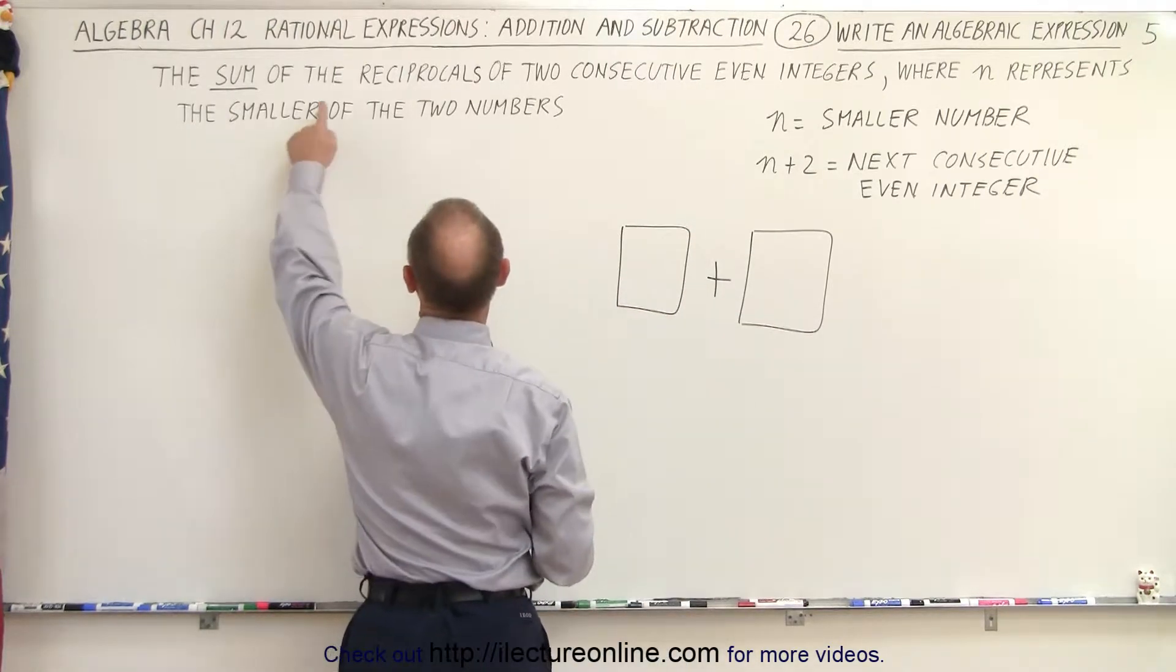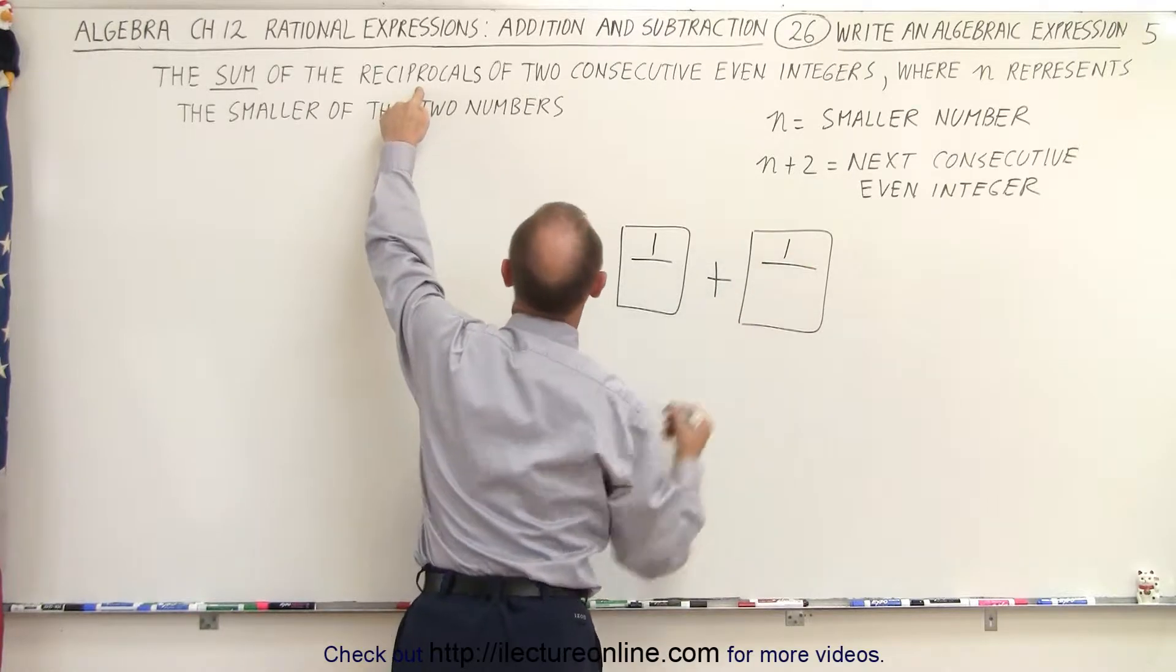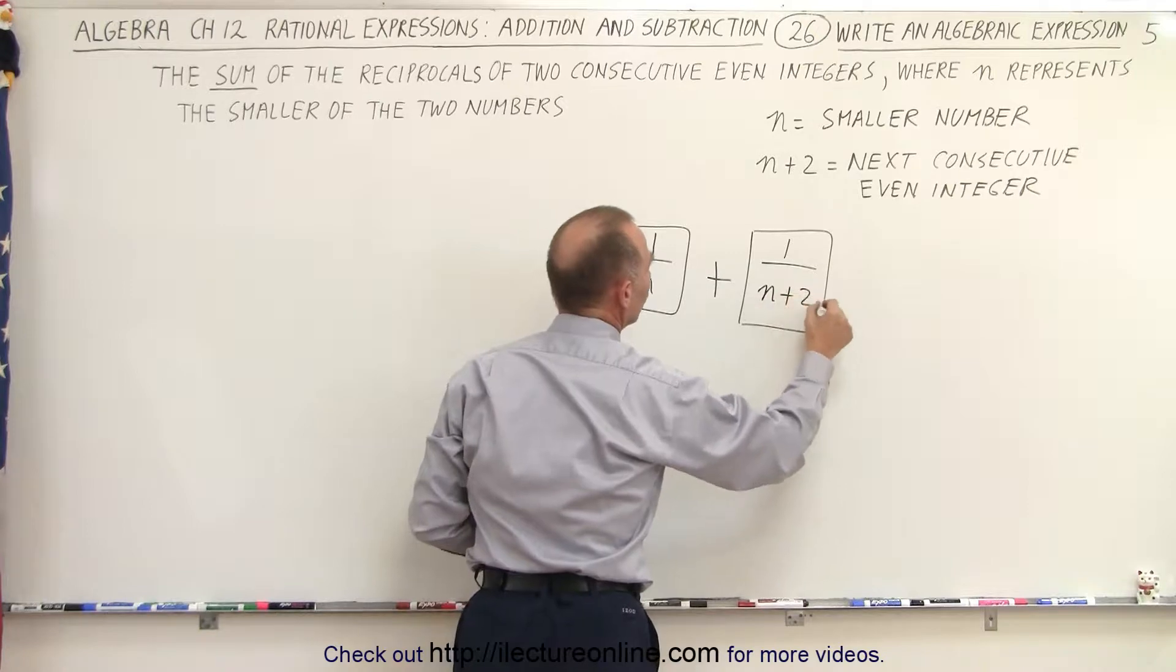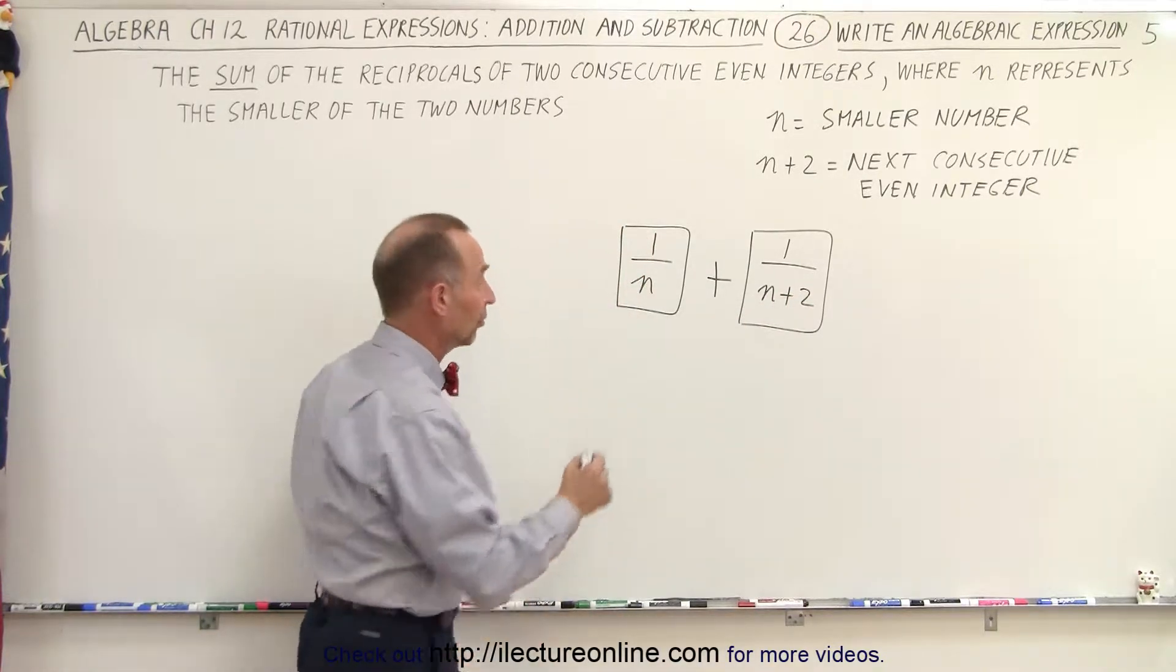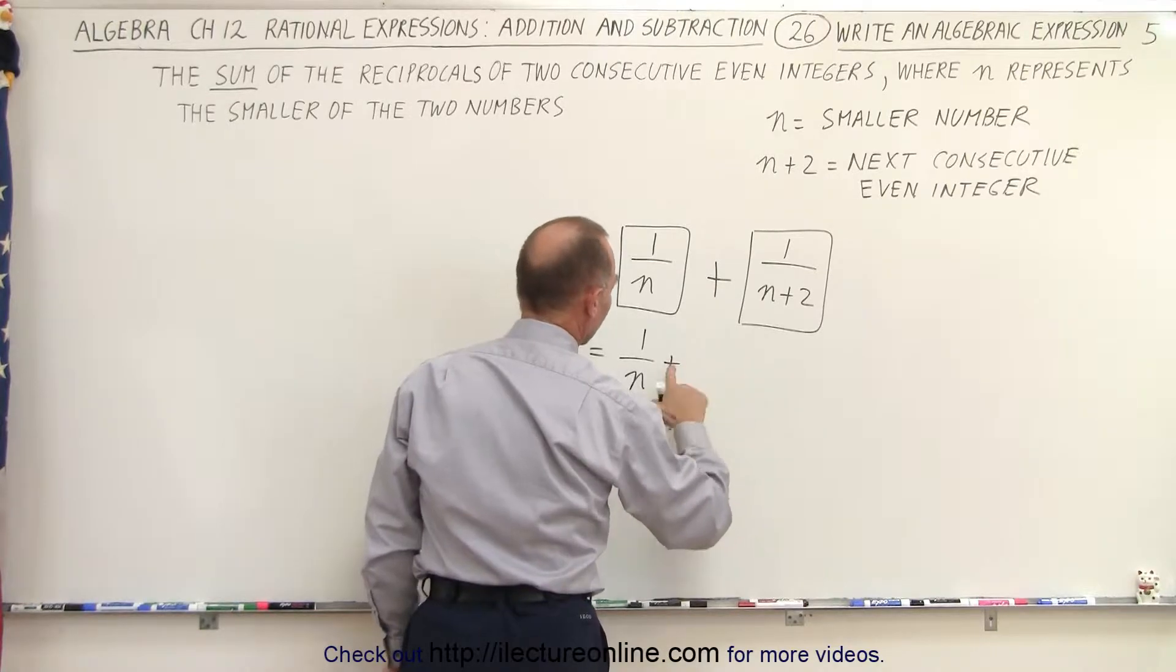So we're supposed to be adding the reciprocals, 1 over the two consecutive even integers, which would be n and n plus 2. And there's our expression. So this can be written as 1 over n plus 1 over n plus 2.